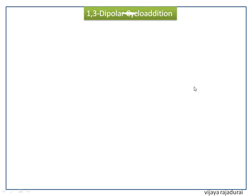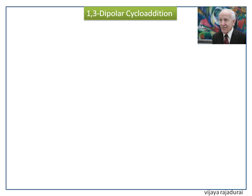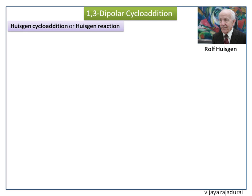We discuss 1,3-dipolar cycloaddition. Rolf Huisgen is a German chemist. One of his major achievements was the development of the 1,3-dipolar cycloaddition reaction, also known as Huisgen cycloaddition. It is the reaction of a 1,3-dipolar compound having 4 pi electrons with a dipolarophile having 2 pi electrons, which leads to 5-membered heterocycles.